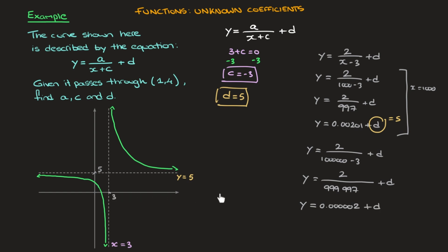And since we know that as x gets bigger and bigger, this curve gets closer and closer to y equals 5, we can tell that the only way for that to be possible is for d to equal 5. Okay, enough said about d.